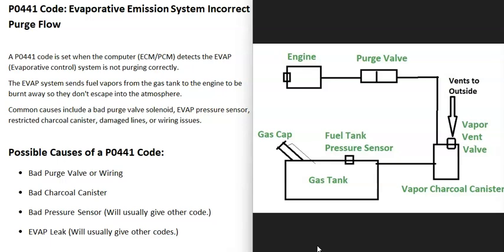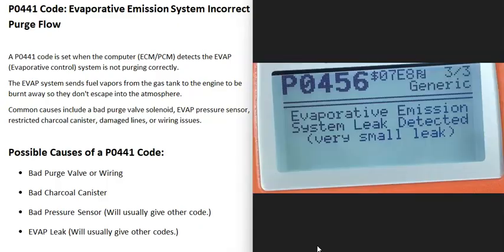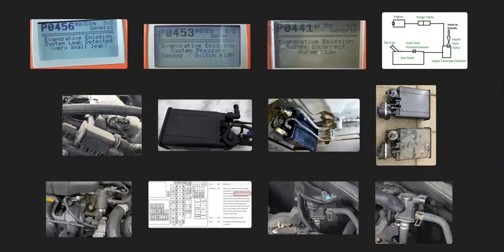The last possible cause is some kind of leak inside the system, which would prevent gas vapors from being purged into the engine correctly. If there is a leak, you'll usually get another code as well — for example, a P0456 (evaporative emission system leak detected, very small leak) would be a good reason to test the system for a leak.